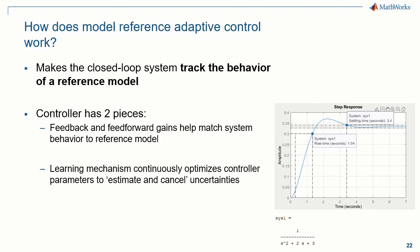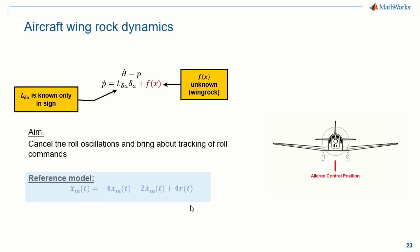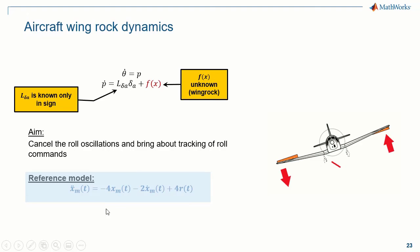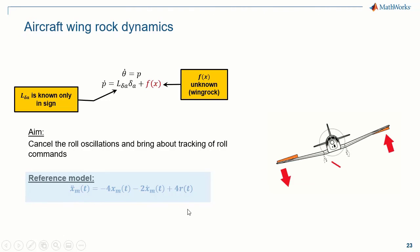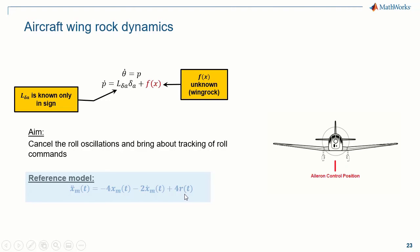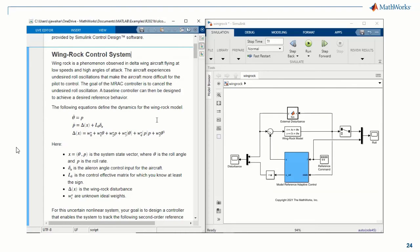For our aircraft example, we can provide a stable second-order system as a reference model, where x is the reference state vector and r is the roll commands given by the pilot. Let's see how this block works in simulation. We'll set up the parameters of the system and the model reference adaptive controller through an interactive live script.